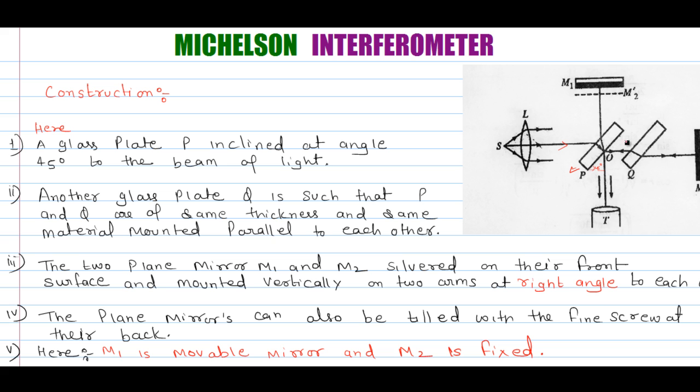Here is also the M1 and M2, these are the plane mirrors. M1 and M2 both are silvered on their front surfaces and mounted vertically on two arms at right angle to each other. This is very important, right angle to each other.